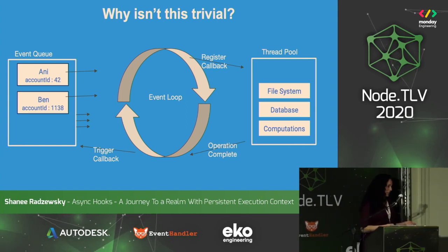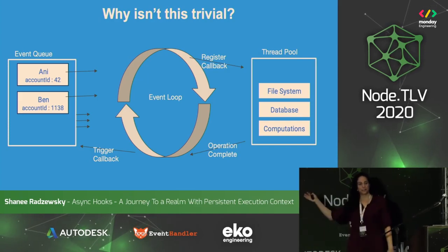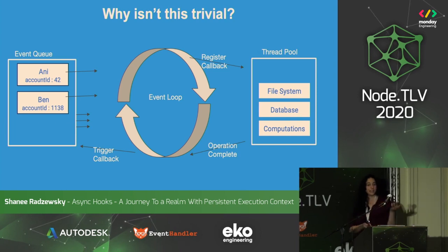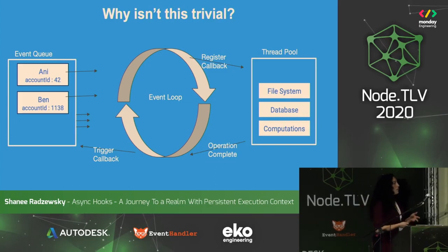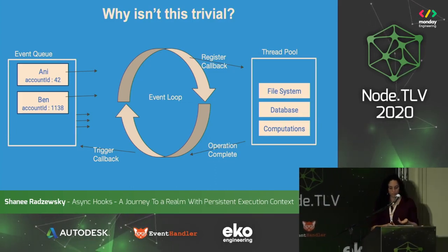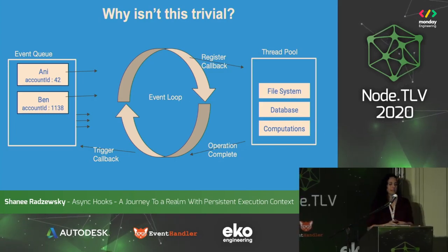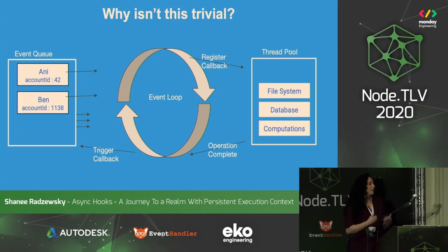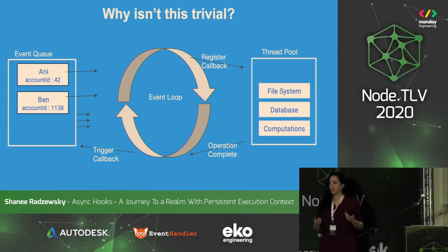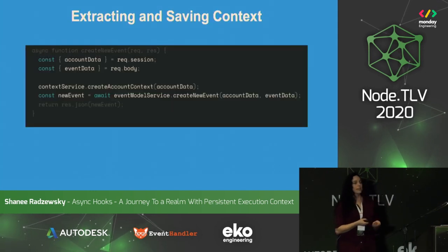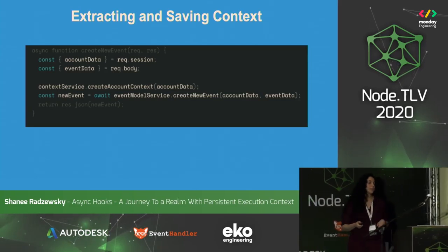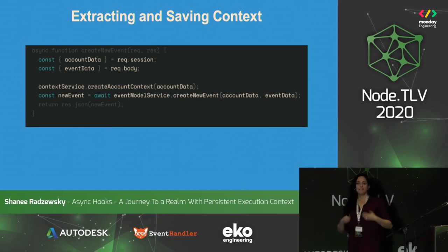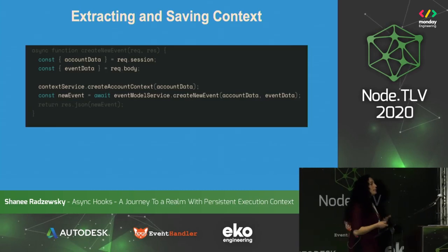My first thought, being relatively new to Node at the time, was: great, we can do this as some global variable. But let's talk about why that's not trivial on Node. Imagine we get different requests from user Annie with account ID 42, and user Ben with account ID 1138. Because of Node's non-blocking nature, every time we have some async operation we register it and keep handling another request. So if we're using a global variable, we'd use middleware or a controller to extract the data and put it on the global scope.